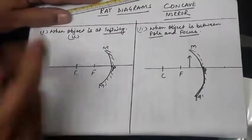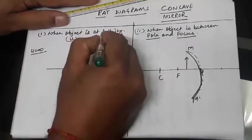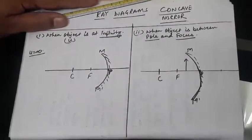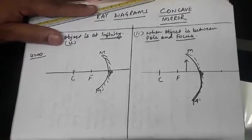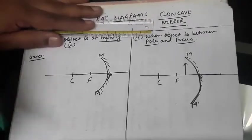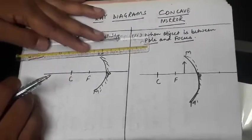So first I am taking when the object is placed at infinity, means like example is sun. Sun is very far from us, thus for us the object is placed at infinity, means sun is placed at infinity.